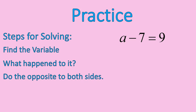Here's a first practice question. Pause the recording. Try that one on your own. Go. Hi, welcome back. What did you get for an answer? I can't hear you talking, but thanks. All right. So where's my variable? A. What happened to my variable? Minus 7. So I'm going to do the opposite to both sides. I'm going to add 7 to both sides of this equation. Negative 7 and positive 7 undo each other. Leave me with A on the left. 9 plus 7 is 16. That's what I have on the right side of the equation. That's how you solve an equation.